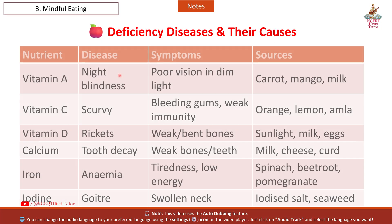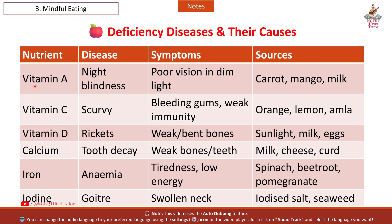Deficiency diseases and their causes. First nutrient: Vitamin A. Disease: Night Blindness. Symptoms: poor vision in dim light. Sources: carrot, mango, milk.